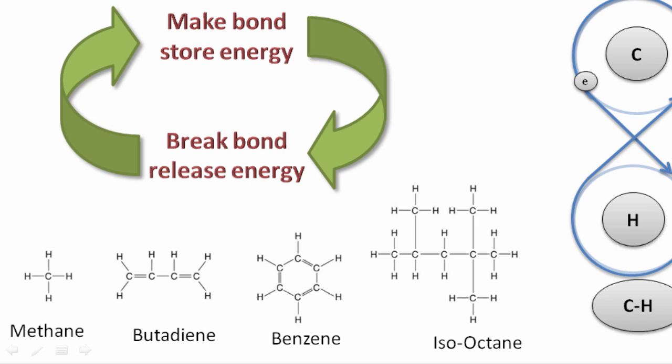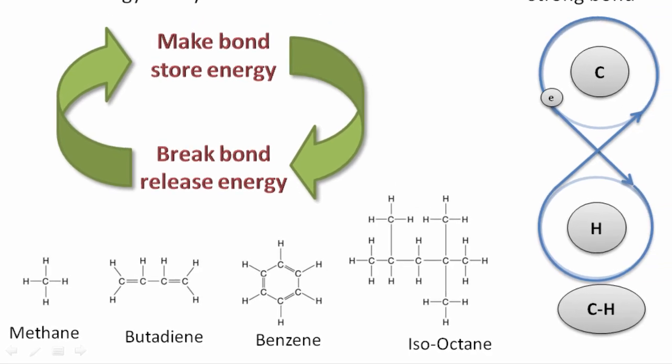can you guess which one stores the most energy? Well, it's probably the one that has the most chemical bonds. And just looking at that, that might be isooctane or benzene. Certainly methane probably has the lowest amount of energy stored as a chemical bond.